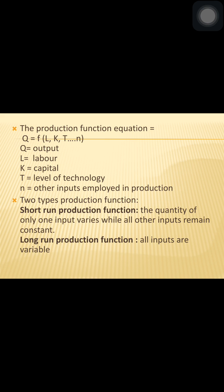There are two types of production functions: short-run production function and long-run production function. The short-run production function is one where the quantity of only one input varies while all other inputs remain constant.